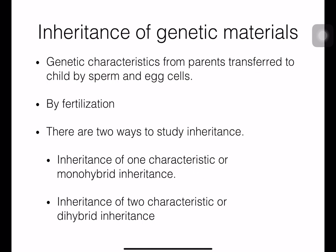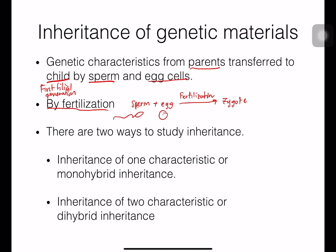The inheritance of genetic materials from the parent gets transferred to the offspring — as I mentioned about the garden pea — by sperm and egg cells through the process of fertilization, where sperm combines with the egg cell to form the zygote. There are two ways to study genetics: monohybrid inheritance, which studies just one character at a time (for example tall vs. short), and dihybrid inheritance, which studies two different characters at the same time.